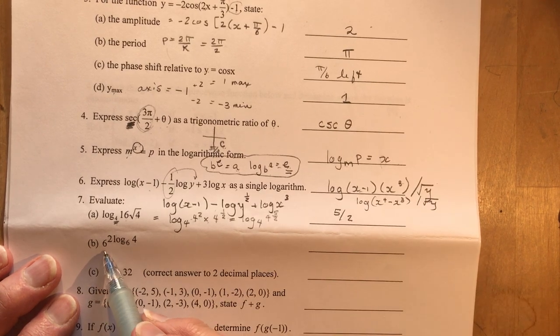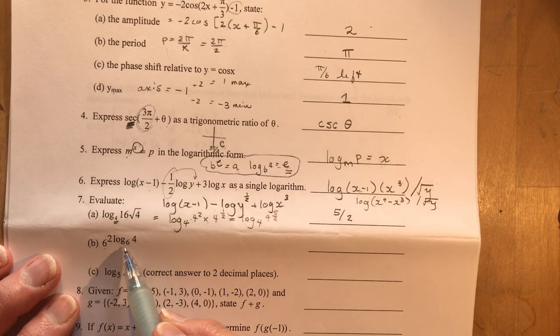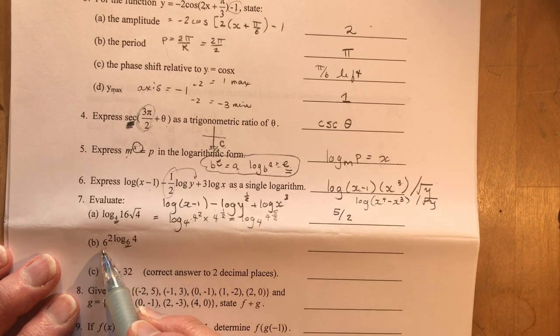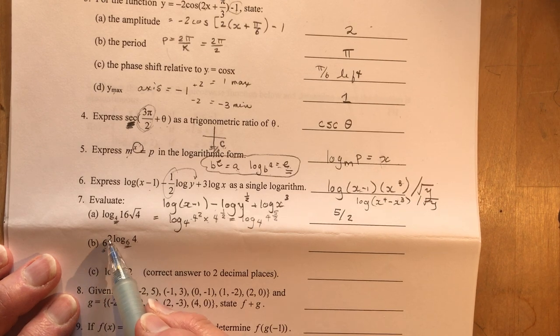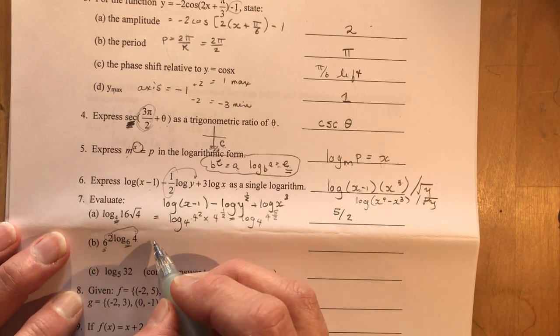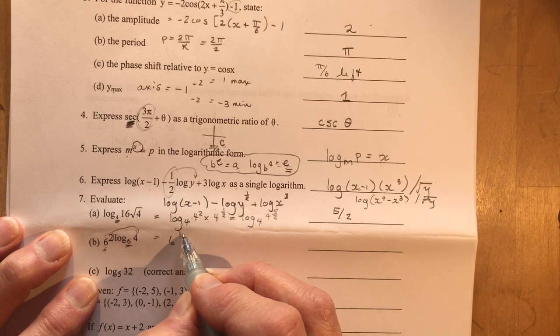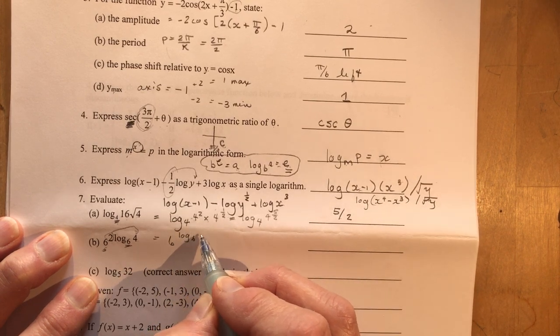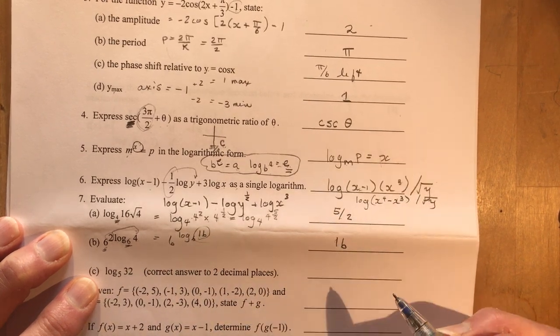Okay. Evaluate this one. 6 to the 2 log base 6 of 4. Okay. So if the base is the same as the base of the exponent here I just have to move this up here. So that means this is going to be 6 to the power of log base 6 of 4 squared which is 16. And there's my answer. 16.